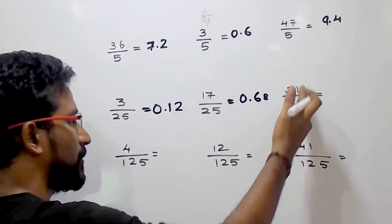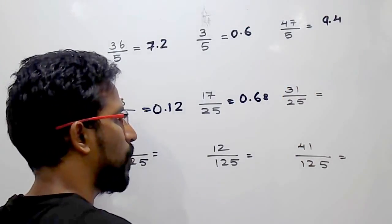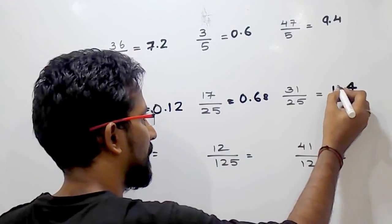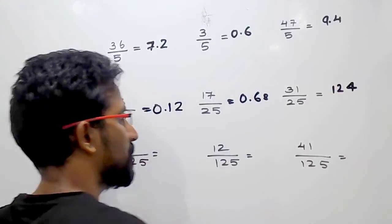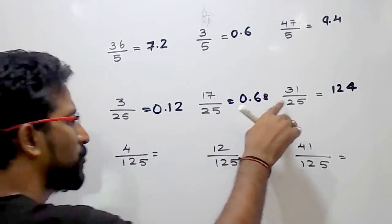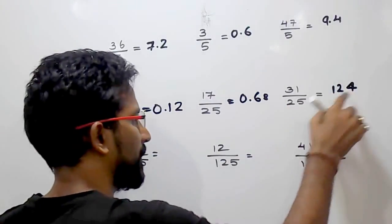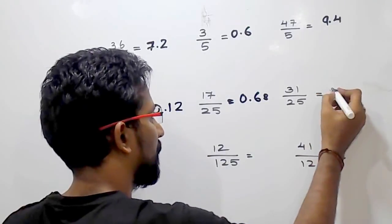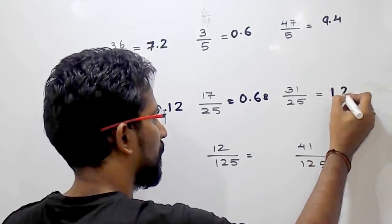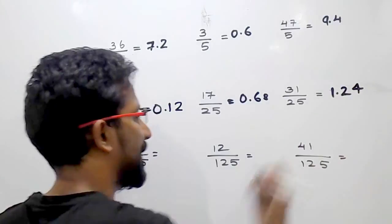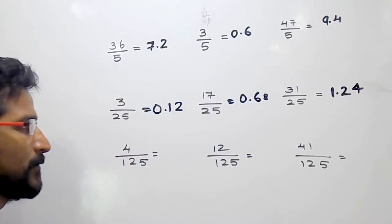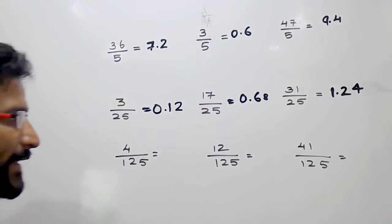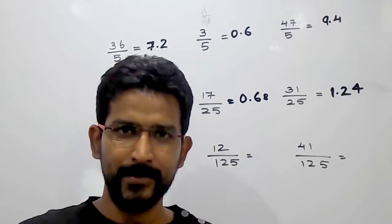Similarly, multiply this number by 4, which gives 124. After two numbers from the right, it will be 1.24. This is how we can divide any number by 25.